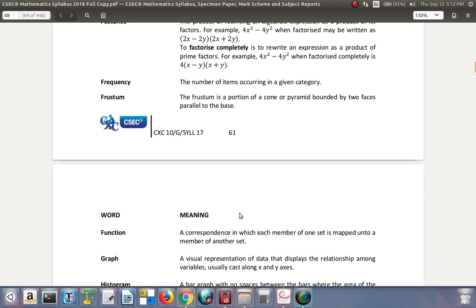Frequency: the number of items occurring in a given category. When you're plotting a histogram or a bar graph, you traditionally have the frequency on the vertical axis. Or in a table, you have frequency and then the value. Frequency means how frequent, how many times, how many of them. The value that has the highest frequency is the mode.